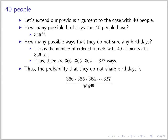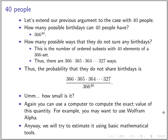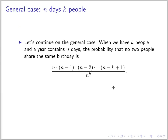Last time we used Wolfram Alpha to estimate this value and we got it to be about 0.1 or something. So now let's try to do that using mathematical tools to estimate this value. Let's deal with the general case first — when we have n days and k people, we can just put n instead of 366 and k instead of 40.